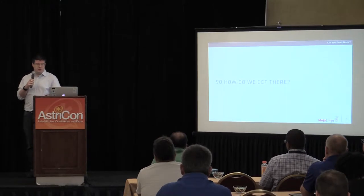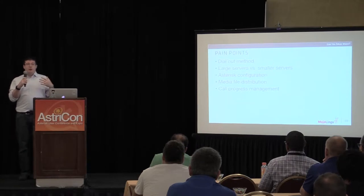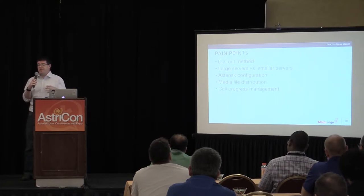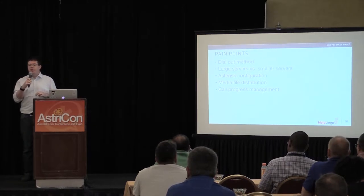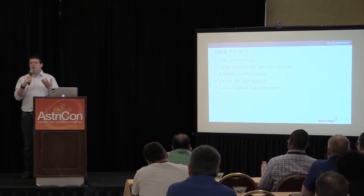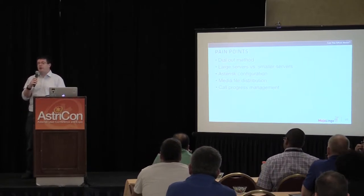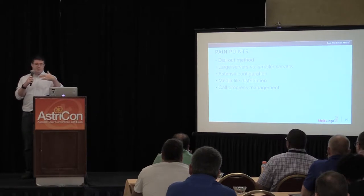Pain points: we had to decide between a few huge servers versus a modern VM-based approach. Asterisk configuration, how to distribute media files — Asterisk HTTP playback is slow, so we have to preload files. And call progress management: monitoring what each call is doing is resource-intensive at this scale. We need very low resource consumption for reporting. We don't need millisecond-accurate call state — we just need reporting to eventually reconcile to a consistent state.